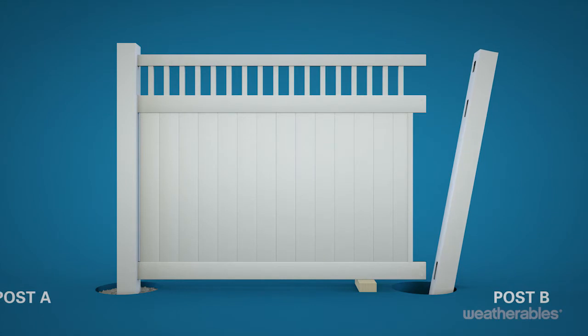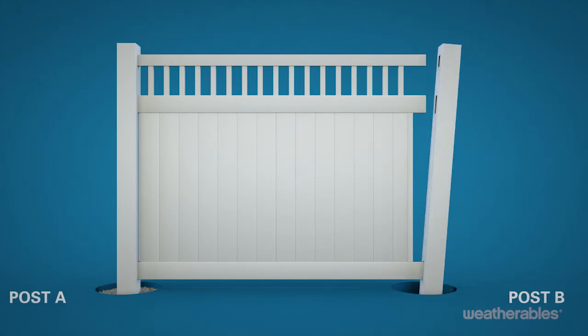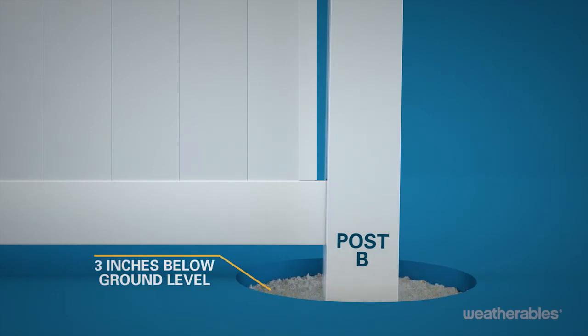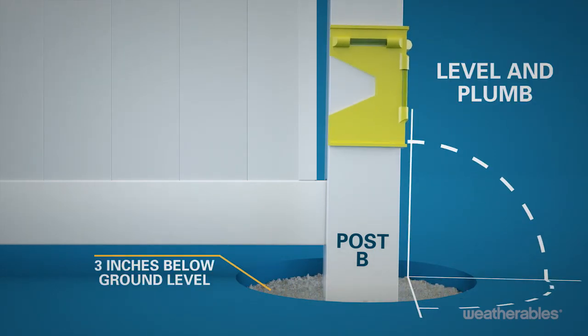Next, slide the bottom rail followed by the mid and top rails into post B. Pour concrete around post B to about 3 inches below ground level, level, and plumb.